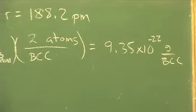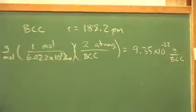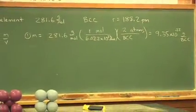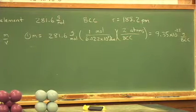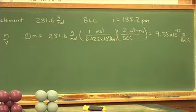Again, 281.6 is its grams per mole or molar mass. Divide by Avogadro's number to find out how many grams per atom, but the structure has two atoms in it. One in the center and one because of 8 times 1 eighth of the corner atoms. So that's step number one.